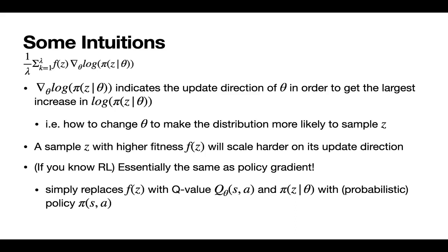Maybe you didn't quite follow all the mathematical derivations we covered so far — that is fine, though I would recommend going back to the confusing parts. But even if we were to just drop all the mathematical derivations and look at the final equation that gives us the gradient, this should still make sense. The log gradient term indicates the direction that we want to update the distribution parameters theta in order to get the largest increase in the log PDF — in other words, it indicates how to change the distribution in order to make it more likely to sample a specific sample z. And then we scale this direction with the fitness f(z). So a sample with higher fitness is going to get its direction scaled up more than a sample with lower fitness. What this equation essentially does is make our distribution more likely to generate high fitness samples and less likely to generate low fitness samples.